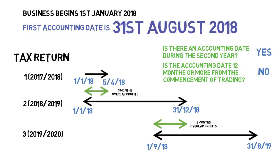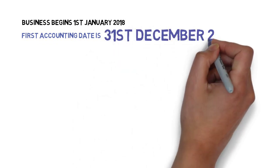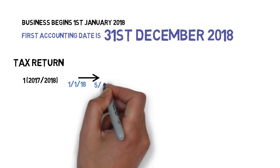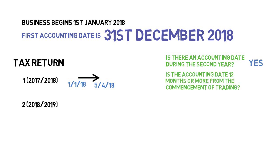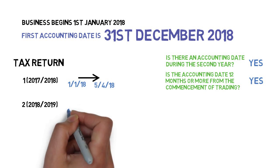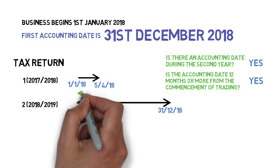In the third example, the business again starts on 1st of January 2018. The accounting date this time is in line with the anniversary of commencing trade: 31st of December 2018. The basis period for the first year is the same, and going into year two we ask: is there an accounting date during the second tax year? The answer is yes, so we ask the second question: is the accounting date 12 months or more after commencing trading? In this case yes, so the second basis period is the 12 months to the accounting date. This creates an overlap period of three months that will need to be budgeted for.